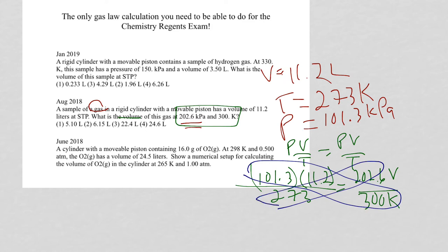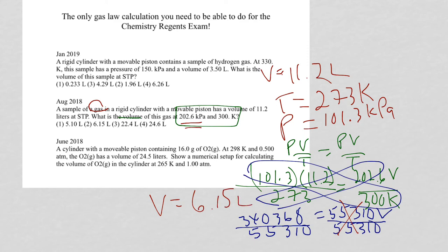I paused the video and did my multiplication. I get 340,368 equals 55,310V. Then I have to divide both sides by 55,310 to cancel. I get an answer that V equals 6.15 liters, which is choice two. Be very thorough, take your time. You can always double-check your calculations. Let's take a look at the final question here.